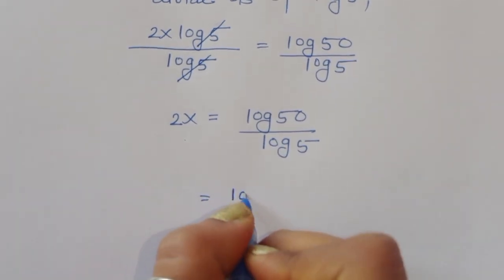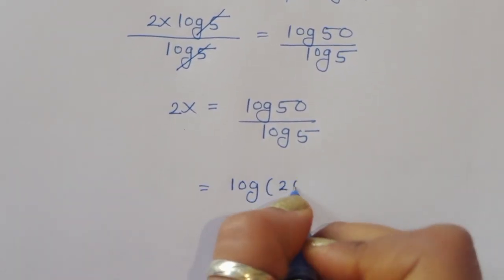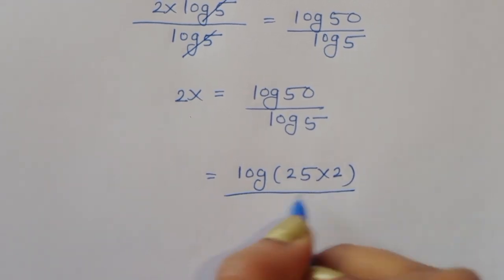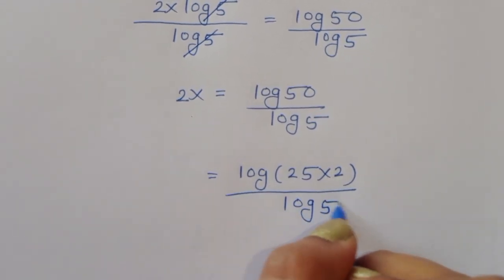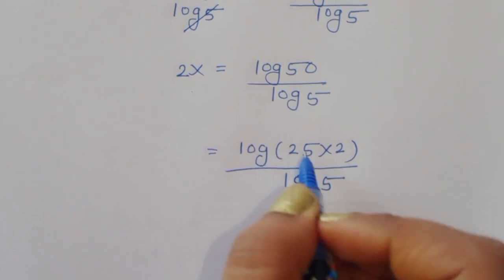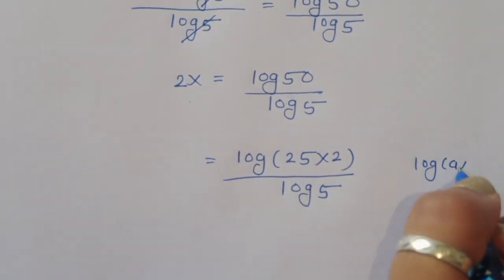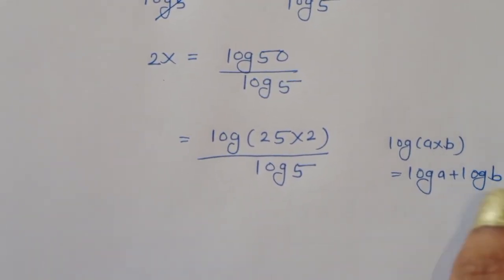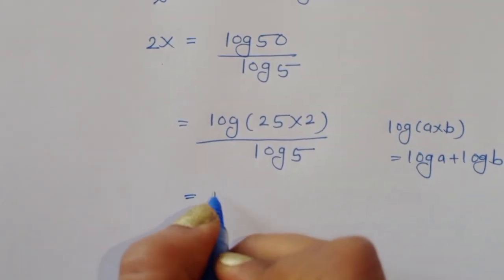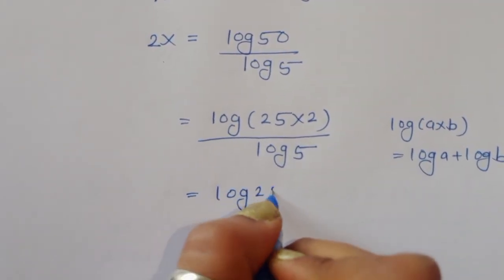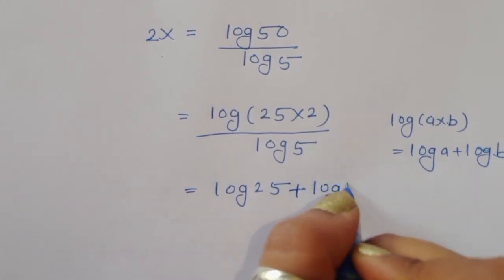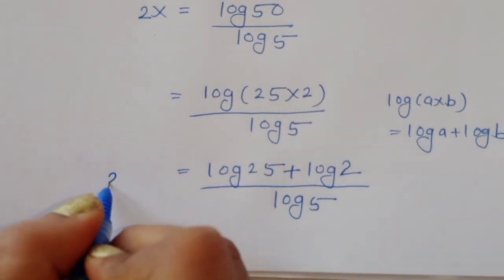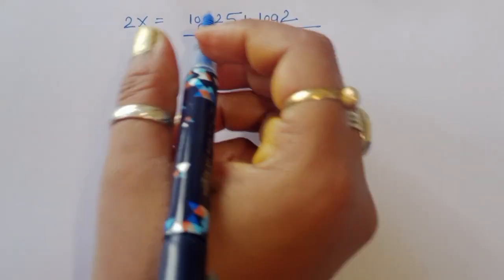Now log(50) — we can write 50 as 25 times 2, so log(50) = log(25·2) divided by log(5). Using the formula log(a·b) = log(a) + log(b), we can write this as log(25) + log(2) divided by log(5). This is the value of 2x.